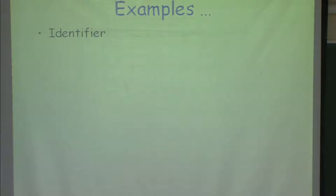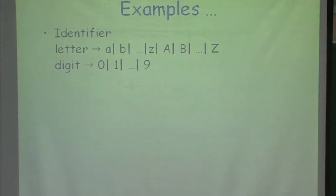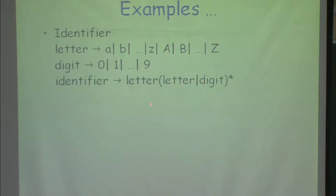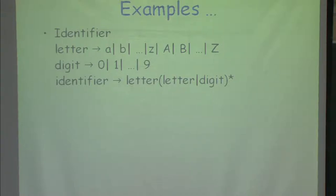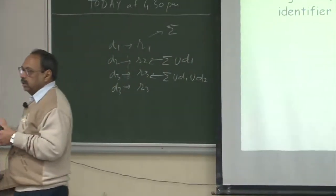Let us get into examples closer to what you will implement in programming language projects. I want to give a specification for an identifier. An identifier consists of letters and digits and always starts with a letter followed by zero or more letters and digits — it consists of at least one letter. This is the kind of specification I can have for identifiers. What you see here is a combination of specifications and definition names: I have given the name 'letter' to this, and 'digit', and the identifier is defined in terms of these.